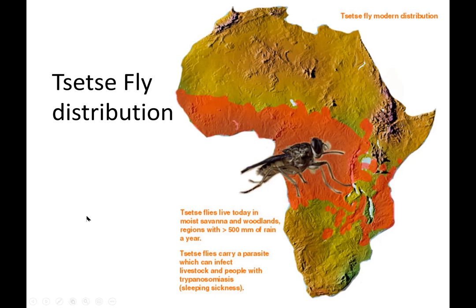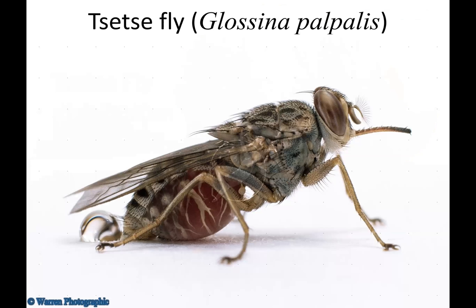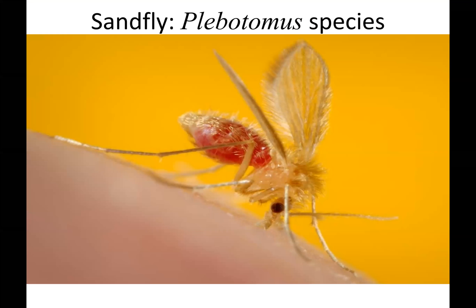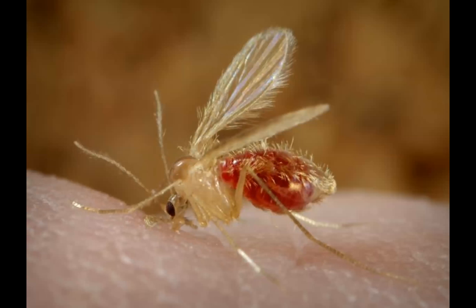Is 20 inches of rain a lot? Not really — we can kind of do that on a weekend around here. The tsetse fly — we've got some great pictures. Just looks like that's going to hurt. We have the sand fly — this is the phlebotomus. Looks like a big oversized mosquito taking a blood meal.